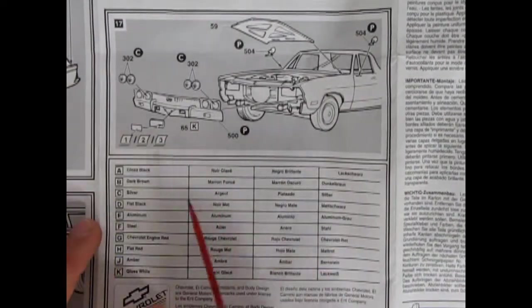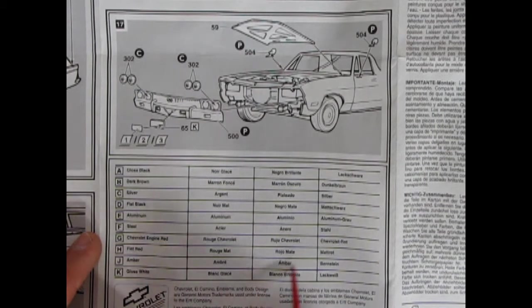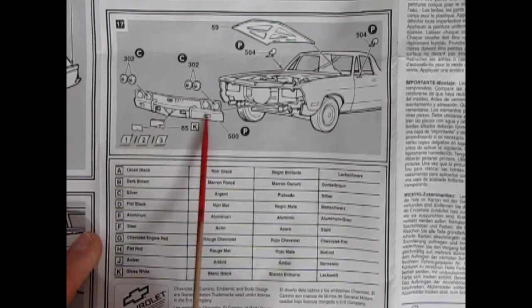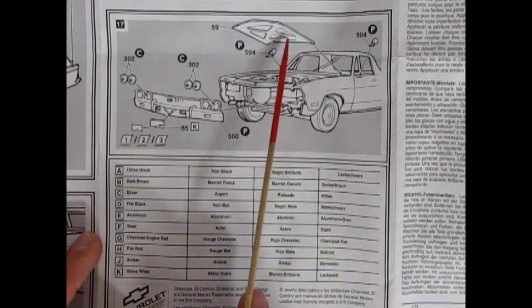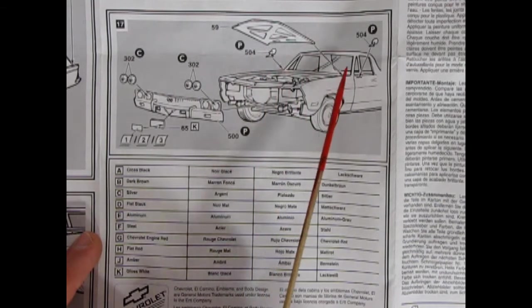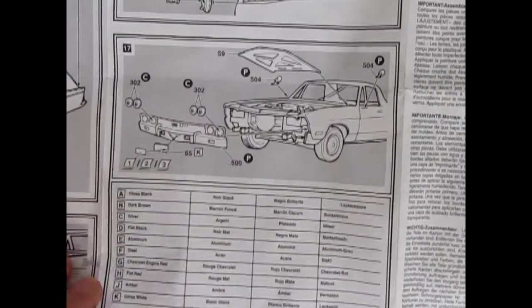And then another nice thing is they give you a paint color call out sheet here. There's our front grille going together with the headlights and the hood and the rear view mirrors. So that concludes our look at the instructions.